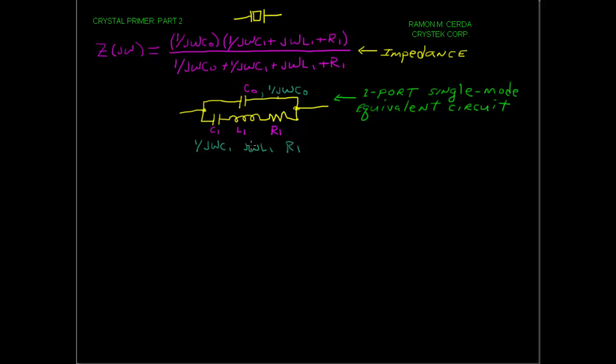Welcome to Crystal Primer Part 2. In Part 1, we derived the impedance equation of the crystal resonator, whose symbol is up here, and we also showed the equivalent circuit, one port single mode, where these three elements here are the motion alarm, and these are the complex impedance of C0. Now, what we want to do in this session is to plot the imaginary portion of the crystal impedance, which is called the reactance, and from that we're going to gather a lot of information that is useful to understanding a crystal resonator.